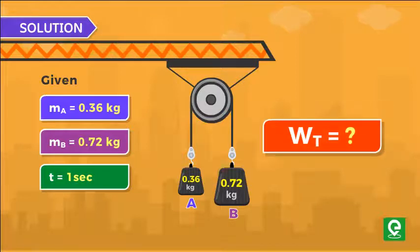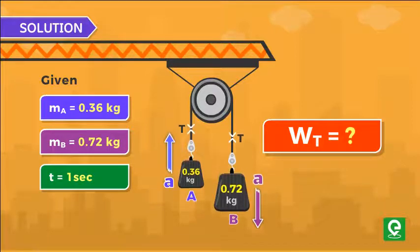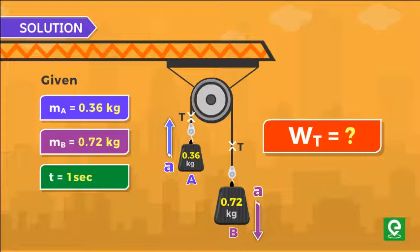We have to find the work done by the tension in the string connecting blocks A and B. Since block B is heavier than block A, therefore block B will move downwards and block A will move upwards with same acceleration a.